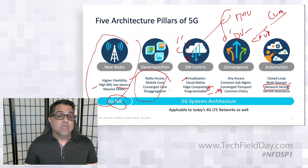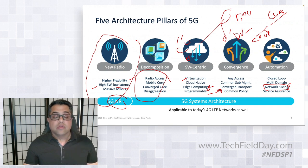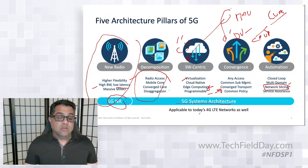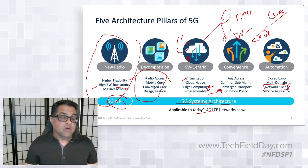So this is the 5G architecture. By the way, some of these services in ORAN are also being done for 4G. So don't be surprised if you see 4G workloads having decomposition and cloud-native architecture, just like 5G.